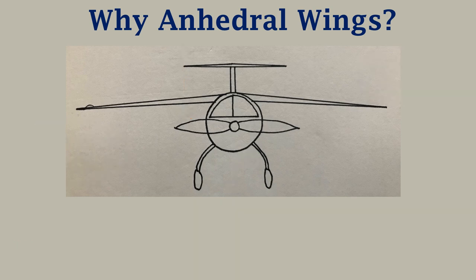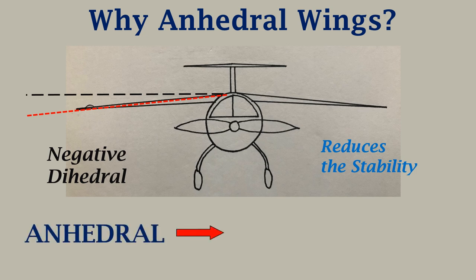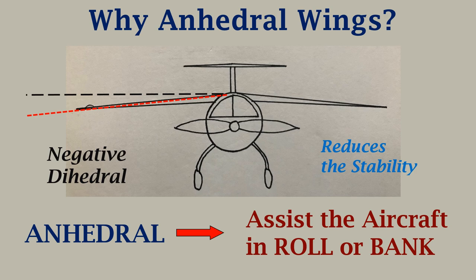So to overcome this, the wings are given a downward angle from the horizontal, which can be called a negative dihedral. This is used to reduce the stability of the aircraft. So the anhedral wings are mainly required to provide assistance to the aircraft in roll or bank — that is, to improve the maneuverability of the aircraft. We had previously stated this as the roll performance of the aircraft.